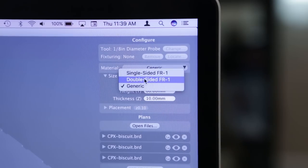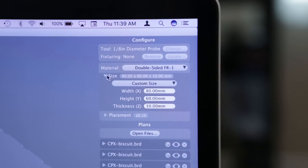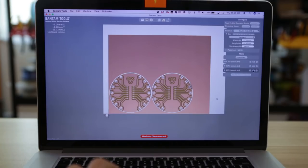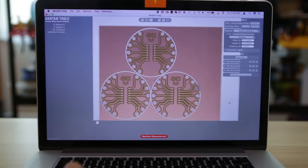The Bantam Tools software has preset profiles so it's easy to configure the material. The 3D workspace allows you to visually see everything making it really easy to place multiple copies.